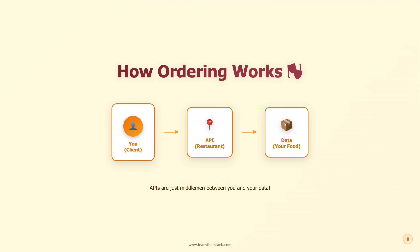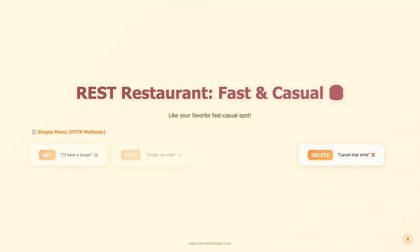Here's how it actually works. You, the client, walk up to an API — which is just a restaurant. You place your order and you get your data back, your food. That's it. APIs are literally just middlemen between you and your data. You ask for something, they go to the kitchen, the server grabs what you need and brings it back to you. No magic, no mystery — just order and pick up.